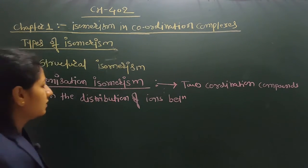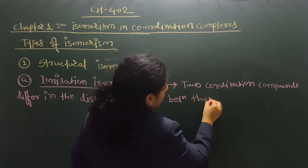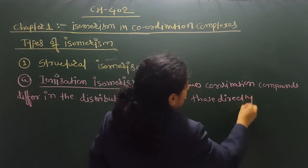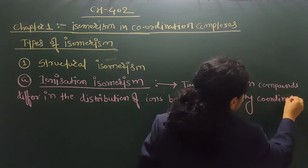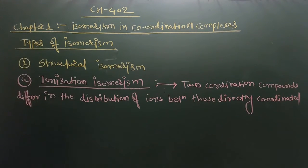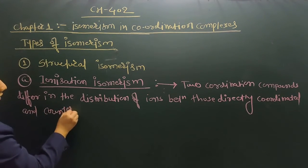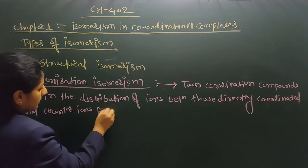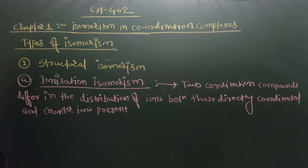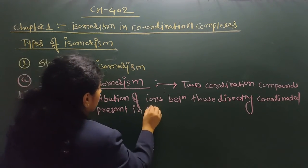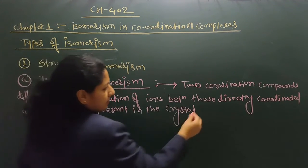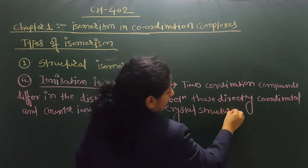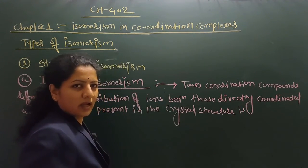Ionization isomerism involves compounds differing in the distribution of ions between those directly coordinated to the metal and those present in the crystal structure. This phenomenon is known as ionization isomerism.